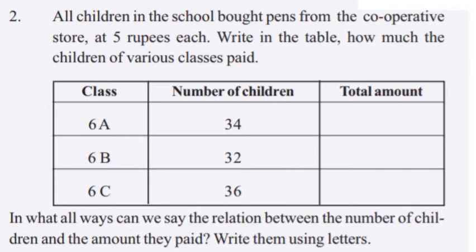We have to write in class 6A, 6B, 6C. Number of children: 34, 32, 32. How do we do the total amount? For class 6A: 34 × 5. For class 6B: 32 × 5, that is 160. For class 6C: 36 × 5.